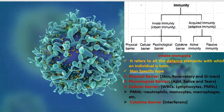Lastly, we have cytokine barriers. Virally infected cells release certain proteins called interferons. Interferons are cytokines that play a crucial role against any kind of infection in the cells.